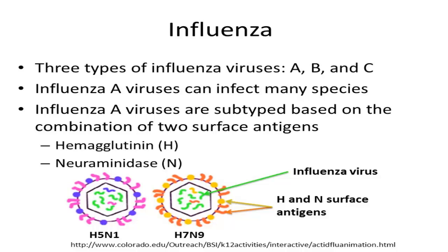H5N1 and H7N9, which are depicted on the slide, are just two of the many examples of influenza A subtypes. These two particular subtypes infect mainly birds but have also caused illness in humans.